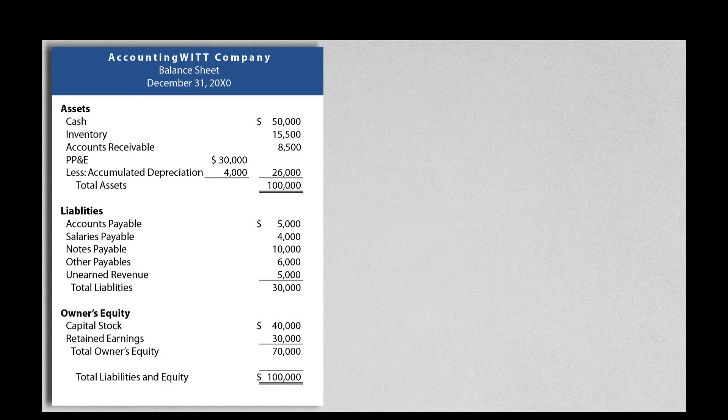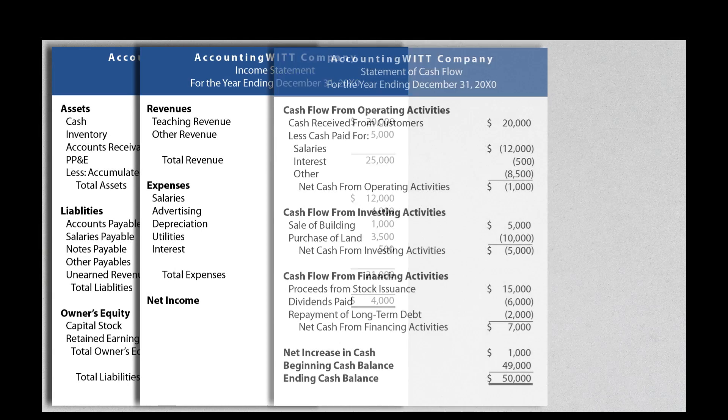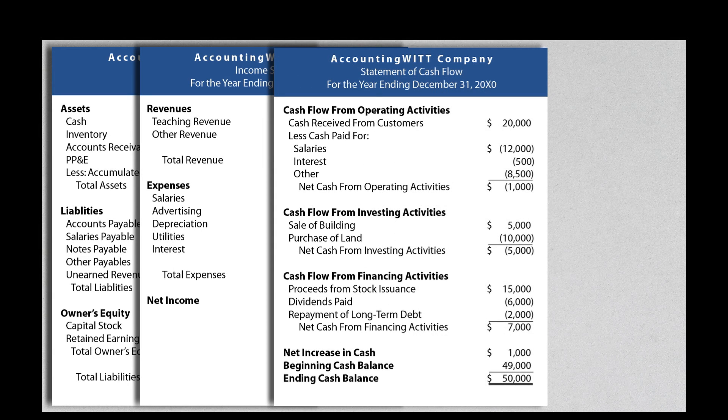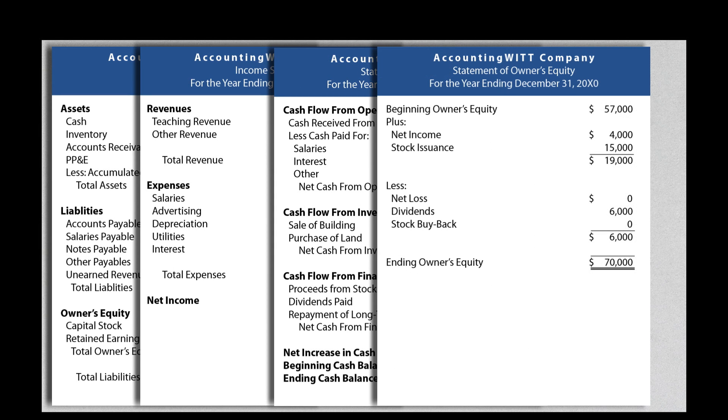The four financial statements required by GAAP are the balance sheet, the income statement, the statement of cash flow, and the statement of owner's equity.